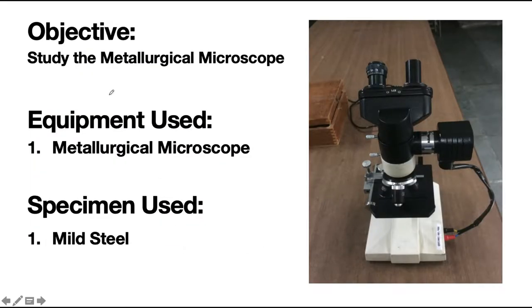Our objective is to study the metallurgical microscope. We are using one of the metallurgical microscopes which is available in our lab. At the end of this video we will also see the microstructure of a mild steel specimen through this metallurgical microscope.